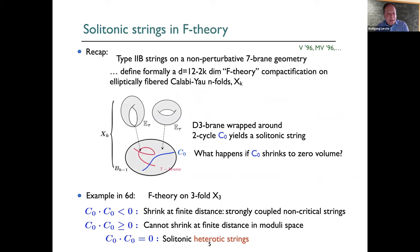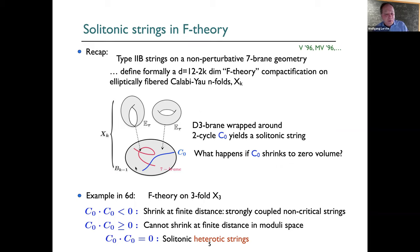Let's set the stage of the framework. We talk about F-theory, which is type IIB strings on a non-perturbative seven-brane geometry, compactified on an elliptically-fibred Calabi-Yau k-fold. You have a little elliptic curve sitting over every point of the base manifold, and sometimes there are singularities at seven-brane locations where the fibers become singular. The question is: what happens if we have some curve C0 in the base, a two-cycle, and a D3-brane wraps around it?